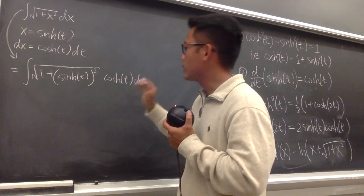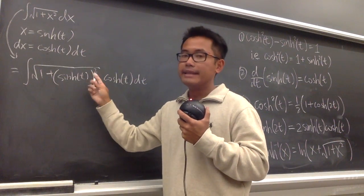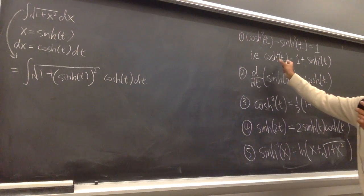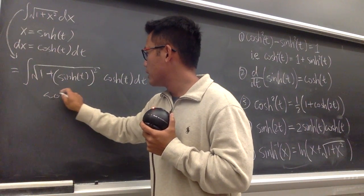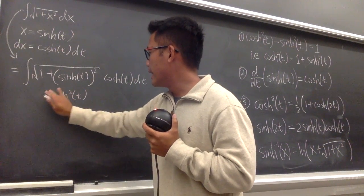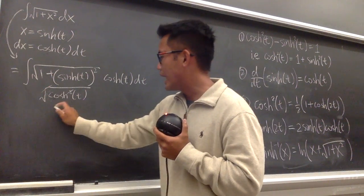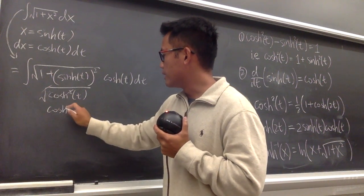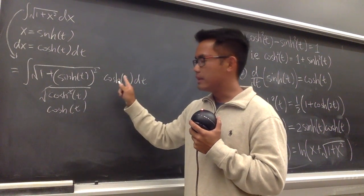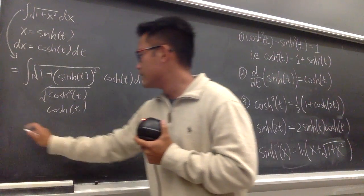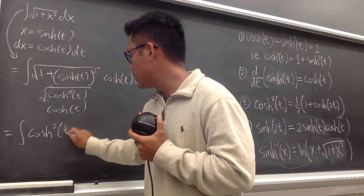So this is what we have. The expression inside the square root is 1 plus sinh²(t), which by our identity equals cosh²(t). Taking the square root cancels the square, leaving us with cosh(t), and multiplied by the other cosh(t) from dx, we are simply integrating cosh²(t)dt.